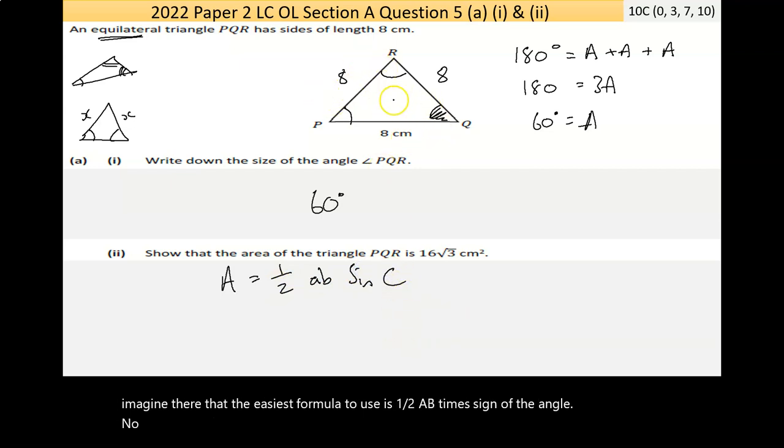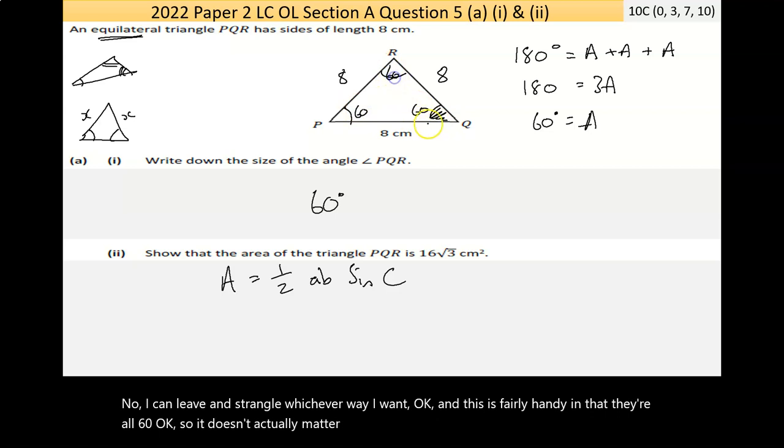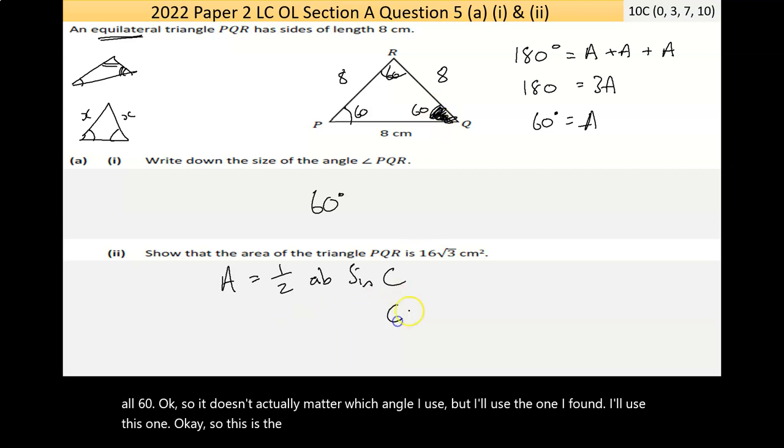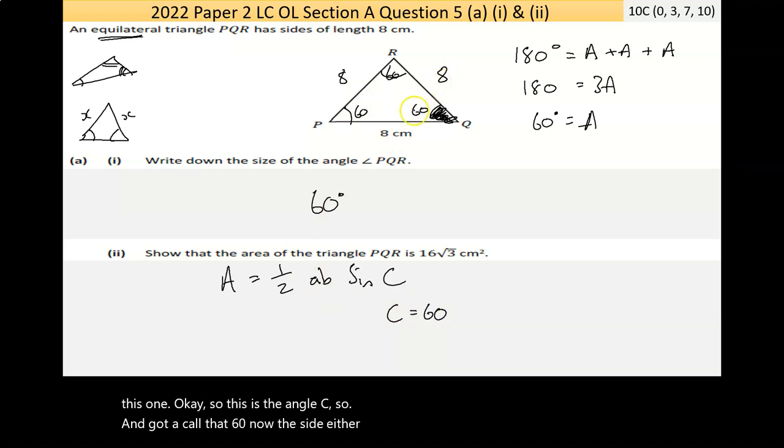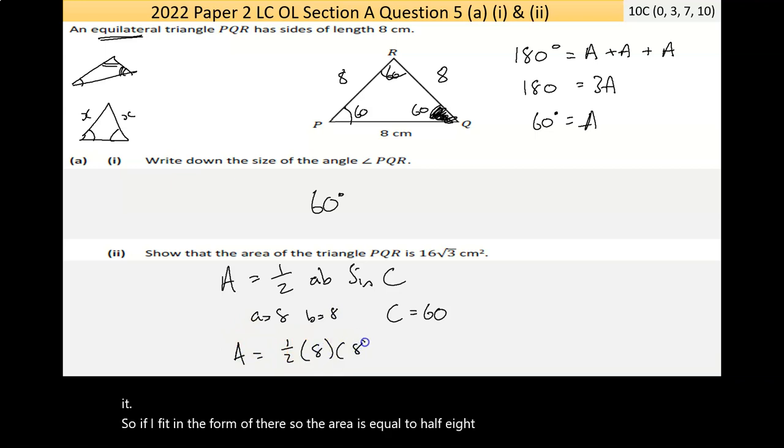Now I can label this triangle whichever way I want. This is fairly handy in that they're all 60, so it doesn't actually matter which angle I use. But I'll use the one I found. I'll use this one. So this is the angle C, so I'm going to call that 60. Now the sides either side of it are the ones you use, and they're both 8. So if I fill in the formula there, the area is equal to a half 8 times 8 times sine 60.